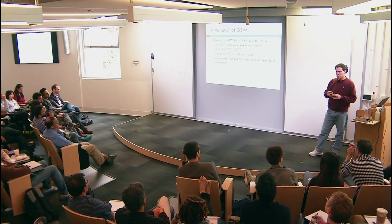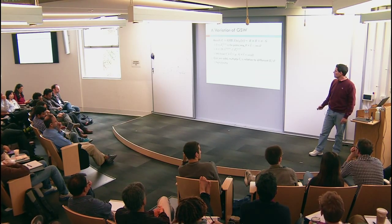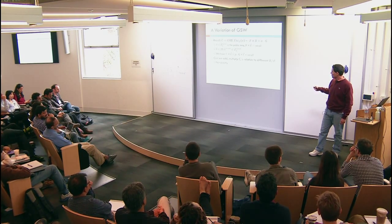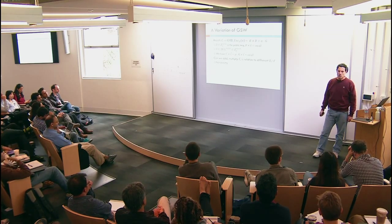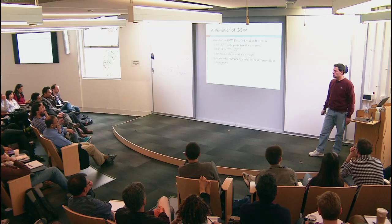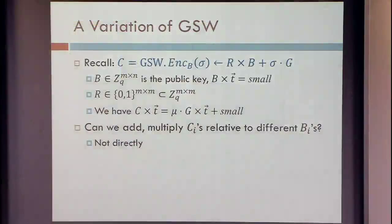So the scheme is going to be a variation of GSW — recall GSW. The main reason I wrote it down is because I wanted to write the encryption explicitly. Usually we don't really care about how to do encryption, but in this construction, the particular way to do encryption is important from the algebra point of view and from the processing perspective.